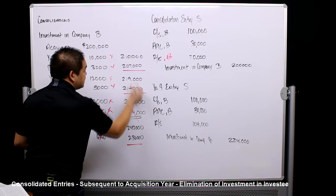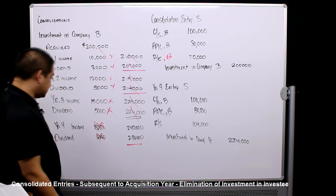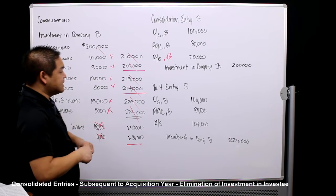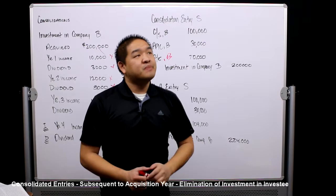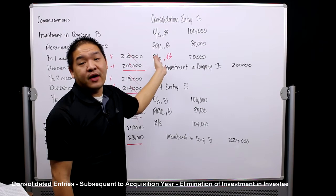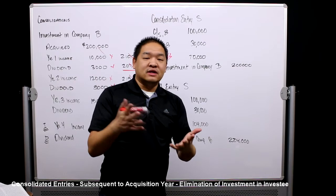All those balances are now zeroed out, and entries I and D take care of the current year income and dividends. These consolidation entries are temporary — they don't carry from year to year. So the next year, we have to redo the entry with the new retained earnings balance.